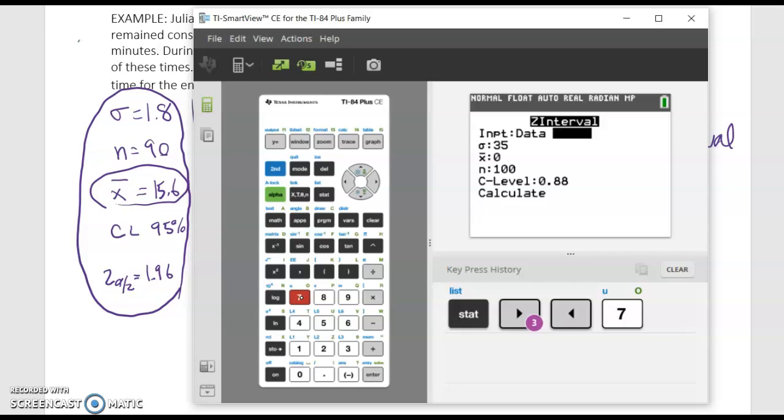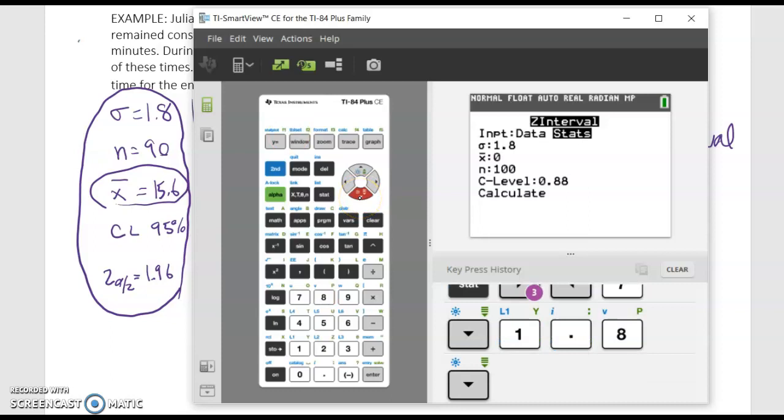We didn't put any data into our list so we're going to select stats. Our sigma in this problem is 1.8. X bar was 15.6 and n was 90. That's our sample size. Our confidence level is 95 percent so we'll write 0.95 and then we'll go ahead and we'll calculate and you'll see that we should come up with the same answer that we got previously.